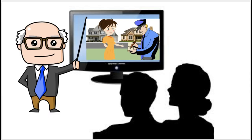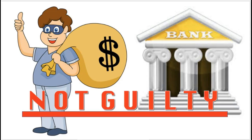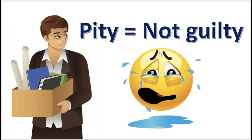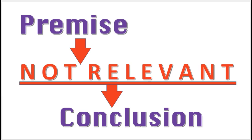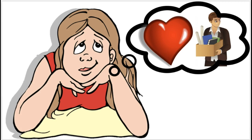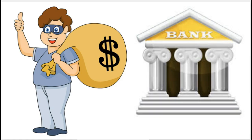Notice how the argument is fallacious. The conclusion is that Frank is not guilty of bank robbery. The premise is that Frank is deserving of pity. The premise is logically irrelevant to the conclusion, because subjective feelings are not relevant to something that is objectively true about a person or what they did.